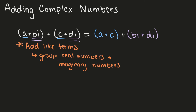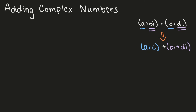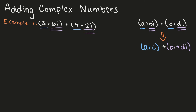Let's move into some examples. First, we have 3 plus 6i plus 4 minus 2i. 3 and 4 are our real numbers and our like terms, so we'll group those together. 6i and negative 2i are imaginary numbers and like terms, and we'll group those together. That gives us 3 plus 4 plus 6i minus 2i. Combining those gives us 7 plus 4i.